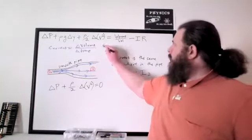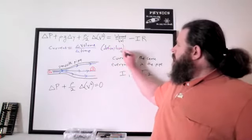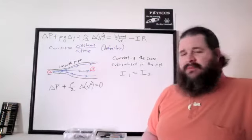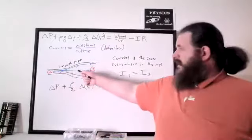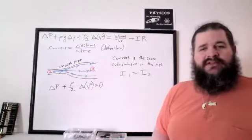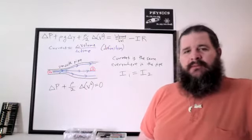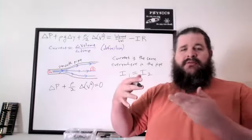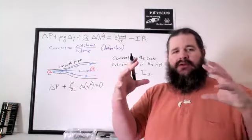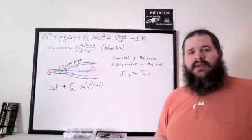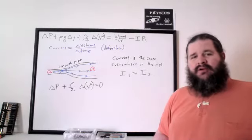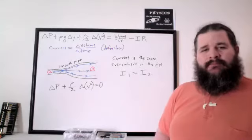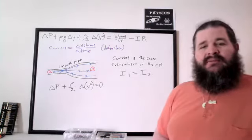This is the definition of current, though it's not always the most convenient formula to use. It's very useful for thinking about why current has to be the same everywhere. If you've got five liters of water flowing in per second, you also have to have five liters flowing out per second. You can't have more fluid flowing in than flowing out, unless the fluid can be compressed. In a steady state system, we assume the current is the same everywhere along the path.